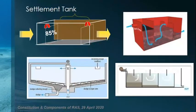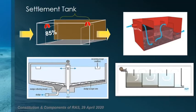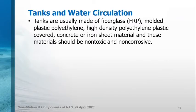When we hear RAS, we generally think of water usage savings. But some river-based open flow facilities use RAS when water quality is reduced in water sources, especially in summer time due to heating. In a similar situation, a settlement tank can be used to prevent access of sand and silt materials carried by the river. The tanks are usually made of fiberglass, molded plastic polyethylene, high density polyethylene, plastic-covered concrete, or iron sheet material. These materials should be non-toxic and non-corrosive, both in fresh water and salt water.